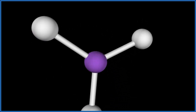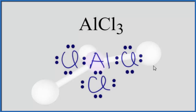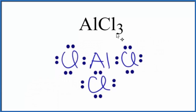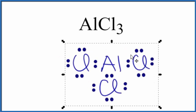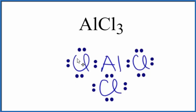Let's go back to our Lewis structure. In answer to our question whether AlCl3 — aluminum chloride — is polar or nonpolar: the bonds between the aluminum and the chlorine atoms are polar bonds. But overall, because they're in equal and opposite directions, they cancel out. Overall, we have a nonpolar molecule. This is Dr. B, and thanks for watching.